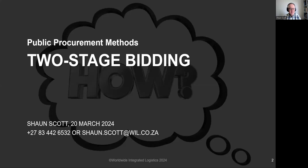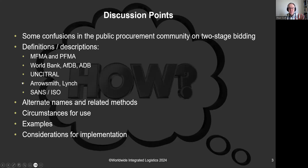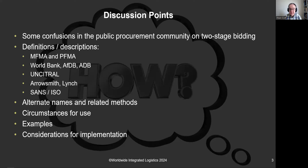This is a method on two-stage bidding, which is a really interesting one. Let me quickly run through what I'd like to cover. First, there is confusion as to what this is, and we'll talk through that. I'll share definitions and descriptions of two-stage bidding from MFMA, PFMA, World Bank, the banks, UNCITRAL, and other global leaders, and we'll give you some other names that are used. Then we'll talk about circumstances for use, examples, and some considerations for implementing two-stage bidding.